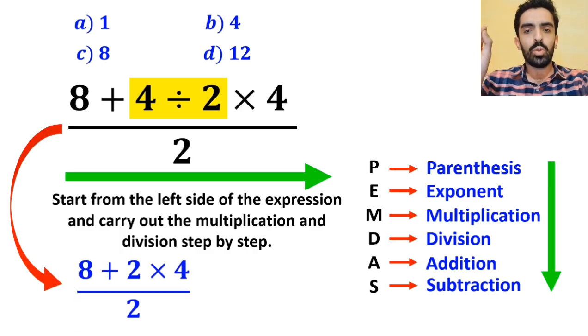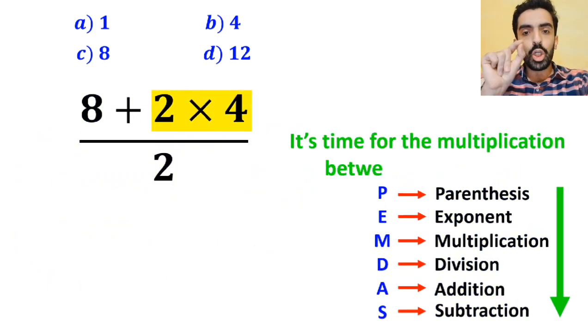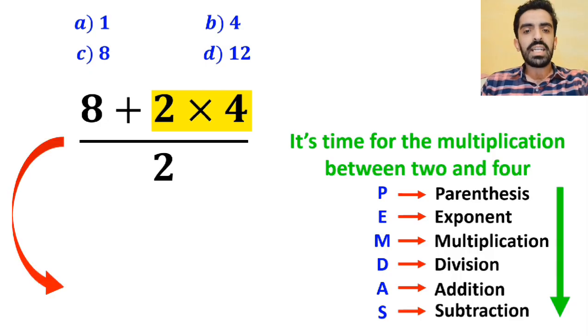So first we go for the division between 4 and 2, and we can rewrite the whole expression as 8 plus 2 times 4 over 2. And the next step, it's time for the multiplication between 2 and 4, which simplifies the expression to 8 plus 8 over 2.